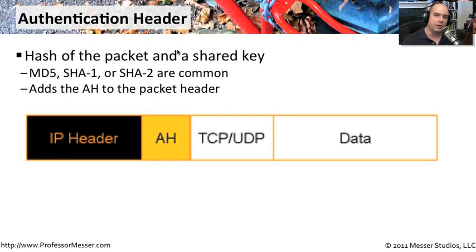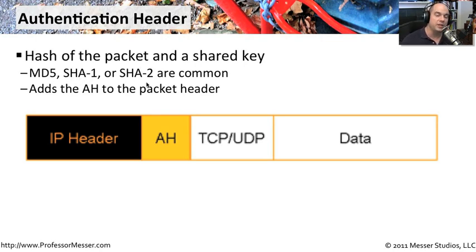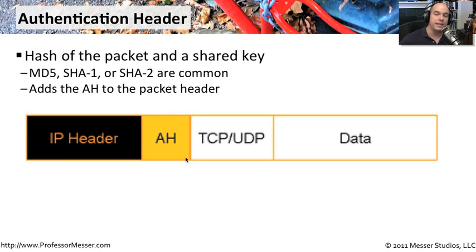The first IPsec protocol is the Authentication Header. This is a hash created based on the packet and the shared key that both sides of the IPsec communication are aware of. It usually uses MD5, SHA1, or SHA2 as common hashing mechanisms. In the normal packet — where you have an IP header, a TCP/UDP header, and then data — it inserts the authentication header in the middle and sends it to the other side. On the other side, the same hash is performed and compared against the authentication header that was sent. This is the digital signature created in every packet, so the receiver knows it got exactly what was sent.